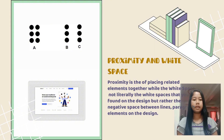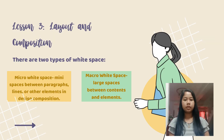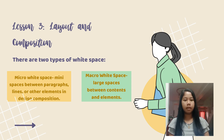White space does not literally refer to white areas on the design, but rather the negative spaces between lines, paragraphs, and elements on the design. There are two types of white space: micro white space — the mini spaces between paragraphs, lines, menu items, or other elements in the design composition — and macro white space, which refers to the large spaces between contents and elements.